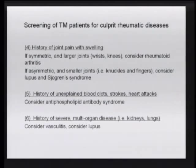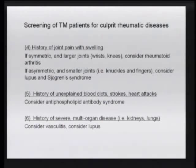If the arthritis is not symmetric and affects smaller joints such as the knuckles or fingers, consider lupus or Sjogren's syndrome. If there is a history of unexplained blood clots, strokes, or heart attacks, consider the diagnosis of antiphospholipid antibody syndrome. If there is a history of severe multi-organ disease — transverse myelitis presenting in the context of very severe lung disease and kidney disease — consider the diagnosis of lupus but also vasculitis, a rheumatic disease where inflammation of blood vessels can affect any part of the body.